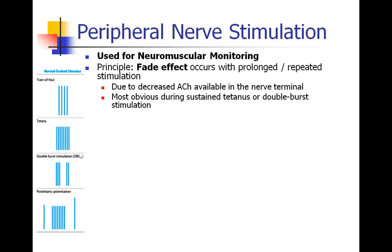The next thing to discuss is peripheral nerve stimulation, or using a twitch monitor, which we use regularly for neuromuscular monitoring. The principle behind peripheral nerve stimulation is the idea of fade. Fade occurs when a neuromuscular junction is repeatedly or prolongedly stimulated, and over time we start to see a decrease in the response as acetylcholine available in the nerve terminal starts to decrease. This is most obvious with a sustained tetanus of about five seconds.